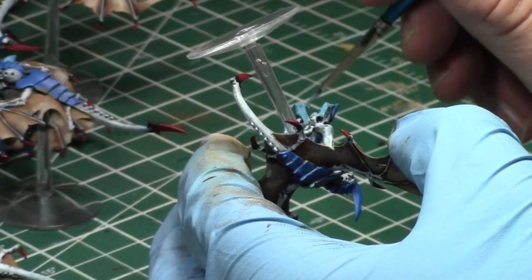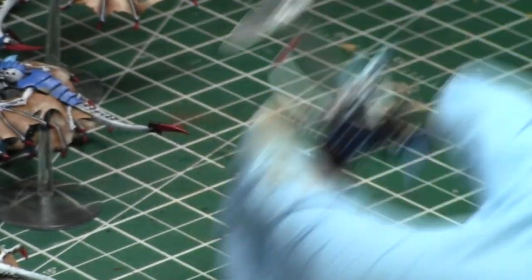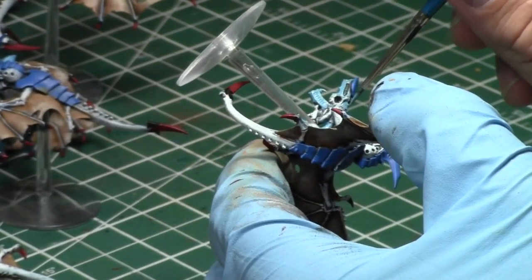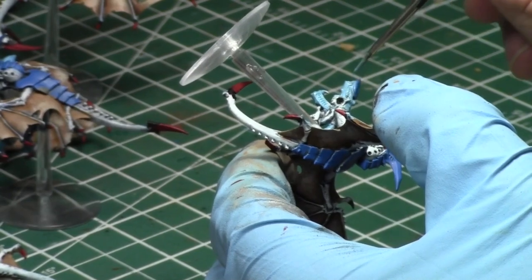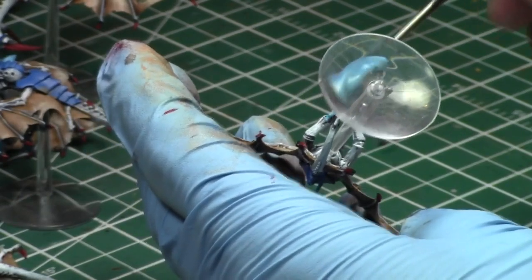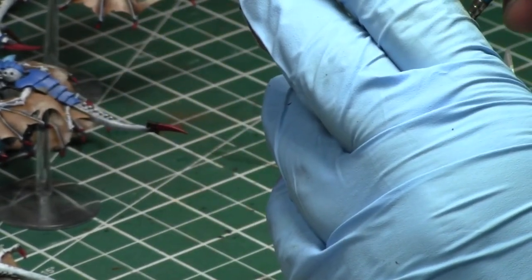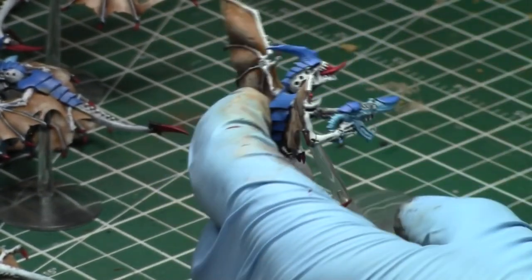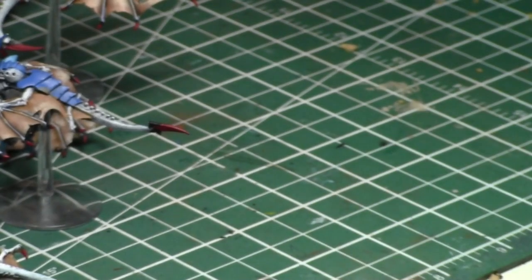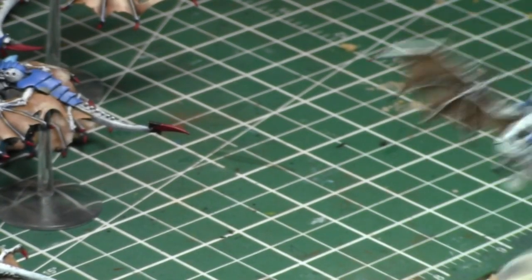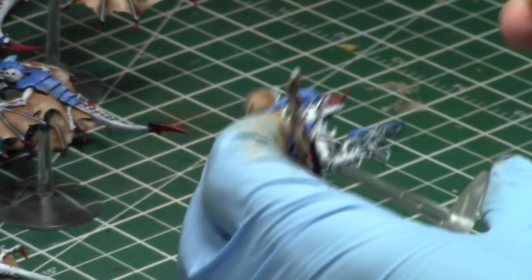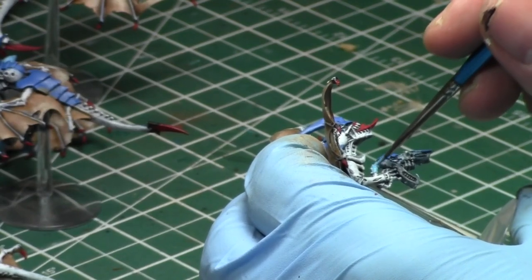That was one of the advantages that Tyranids had, was that people would be tailoring against Titans, but not against Flying Monster Creatures. So the end result was that a lot of your Flying Monster Creatures would be surviving these games, because your opponent just didn't have enough Skyfire to take down three Hive Tyrants before they were able to kill what they wanted to kill.